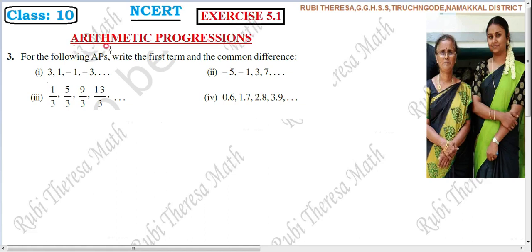For the following APs, the given sequence is an arithmetic sequence. If we add the initial term, the difference will be common — the sequence is increased by a fixed number. So for these APs, we will verify the numbers. Instead of the given APs, we should write the first term and the common difference.